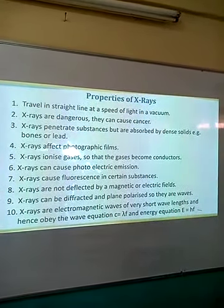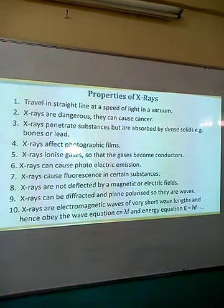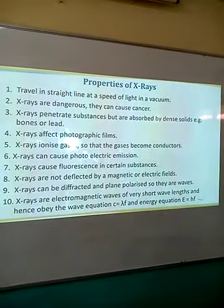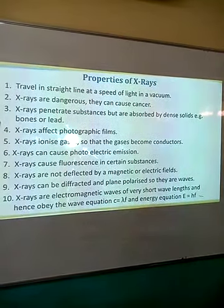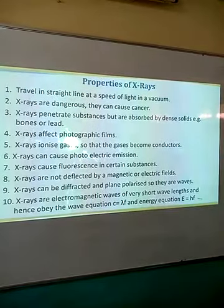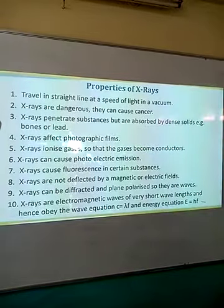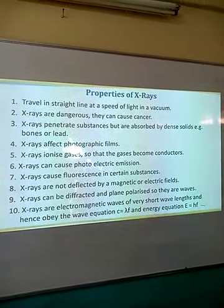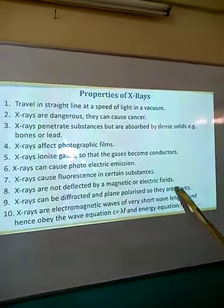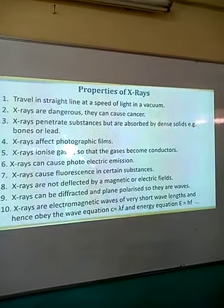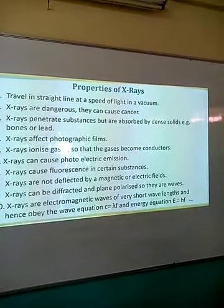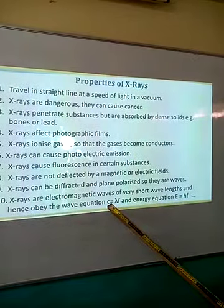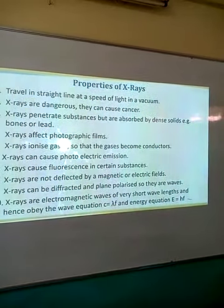Six, another property is that they cause photoelectric emission. Once directed to a metal, they can lead to the ejection of electrons — this is what we call photoelectric emission. Seven, X-rays cause fluorescence in certain substances. Eight, they are not deflected by magnetic or electric fields, meaning these rays are chargeless or neutral. Nine, these rays are refracted and polarized, since they are waves. Ten, these rays are electromagnetic waves of very short wavelengths. The speed is given by C = λF, where C is the speed, λ is the wavelength, and F is the frequency.